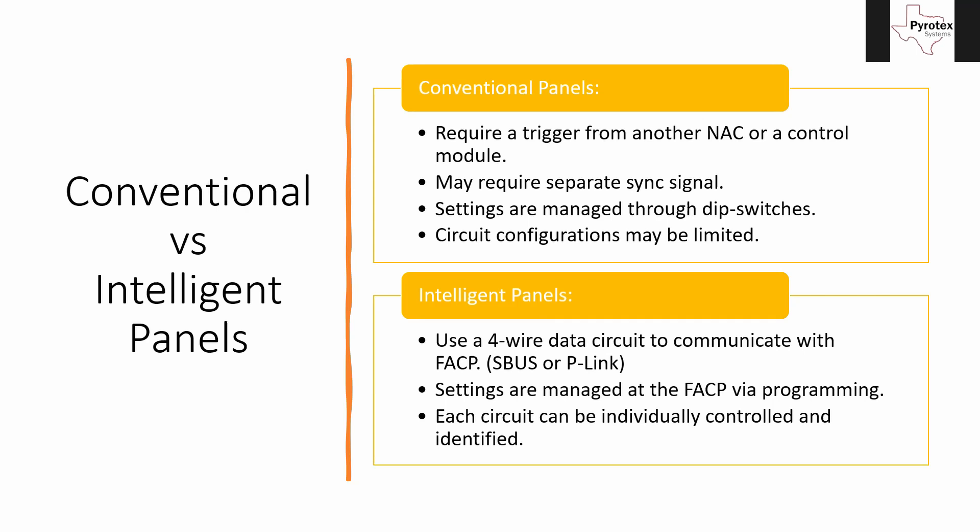Another common one — one of the panels we've probably put in the most — is that NAC 4 can be configured to be a door holder. So it's always putting out 24 volts, and whenever it gets an input, NACs 1 through 3 will activate like a standard strobe circuit, but NAC 4 will release the doors.